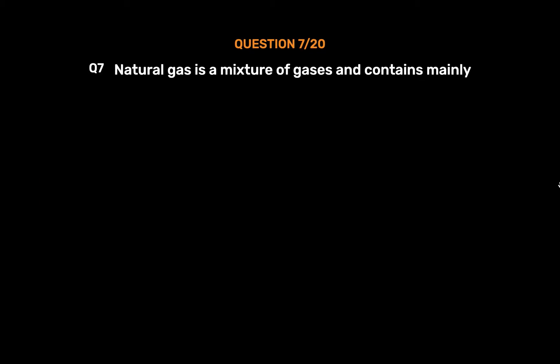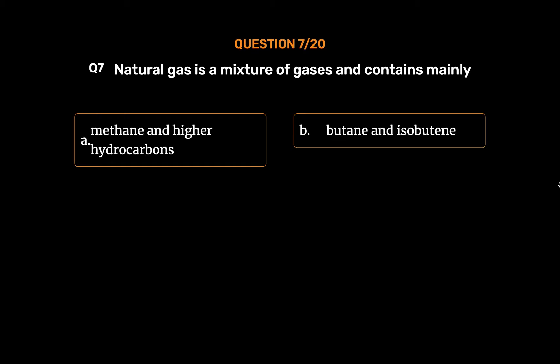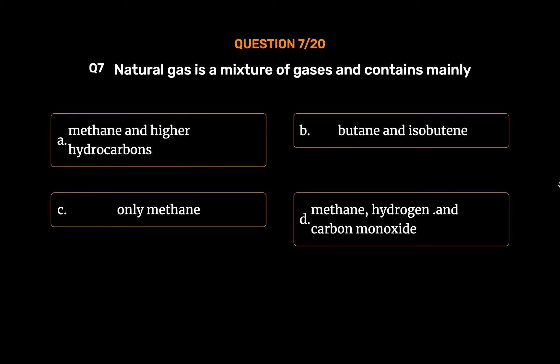Question No. 7: Natural gas is a mixture of gases and contains mainly: Option A, Methane and higher hydrocarbons; Option B, Butane and isobutene; Option C, Only methane; Option D, Methane, hydrogen, and carbon monoxide. The correct answer is Option A, Methane and higher hydrocarbons.